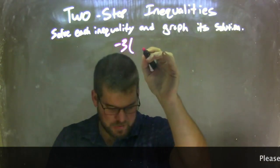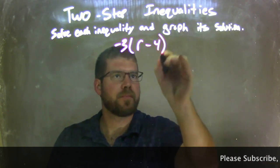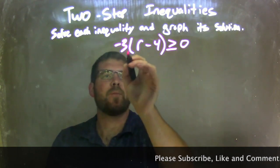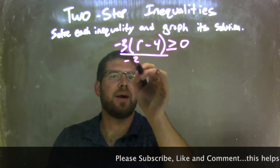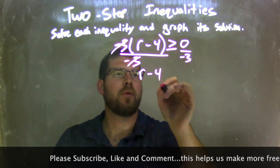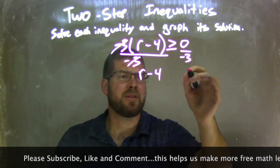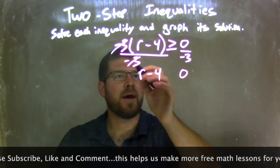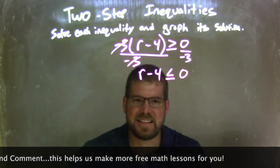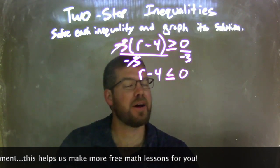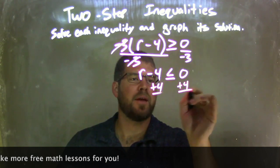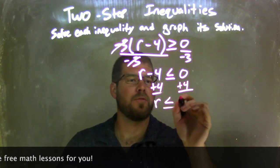Negative 3 times (R minus 4) is greater than or equal to 0. I need to get rid of that negative 3, so I divide both sides by negative 3. The negative 3s cancel, leaving R minus 4 on the left, and 0 divided by negative 3 is just 0. Since I divided by a negative over the inequality, the sign flips from greater than or equal to, to less than or equal to — don't forget the equal to part. I then add 4 to both sides, giving R is less than or equal to positive 4.